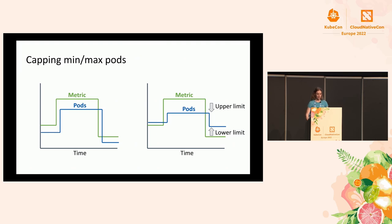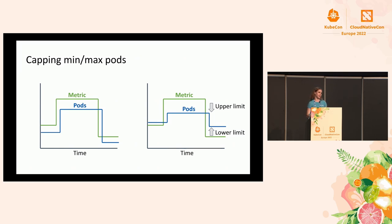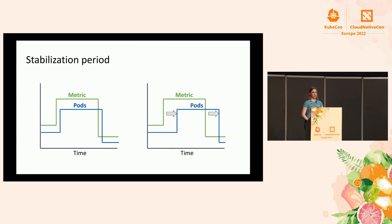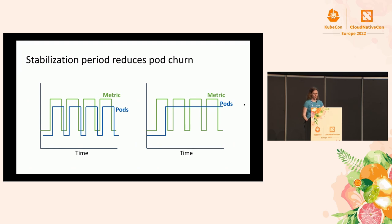On the right is a chart of my metric, with the number of pods slightly lagging behind it. When you cap the number of pods, you're squishing this curve. For the same metric, you can squash down the maximum number of pods and put a bottom limit as well. This is good when you have resource constraints or want to guarantee that at least a certain number of replicas are running. You might add a stabilization period, which says you don't want to make changes too quickly — wait before making a change to confirm it's actually something you need to scale on. This may look strictly worse, but it reduces pod churn.